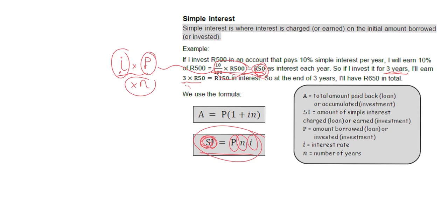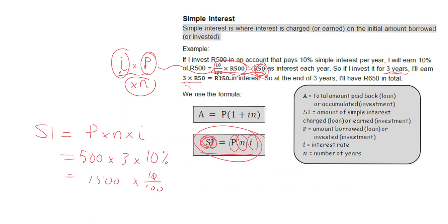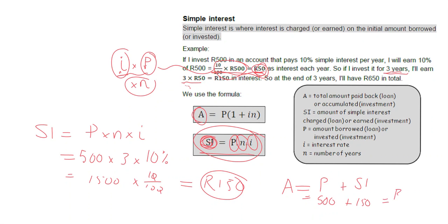You can use this formula. For this scenario, simple interest earned equals P × N × I. P is 500, N is 3, I is 10%. So you get 1,500 times 10% which works out to 150 rand. To get the total — we use A for accumulated amount — you take the amount originally invested (500) and add the simple interest (150), giving a total of 650 rand.